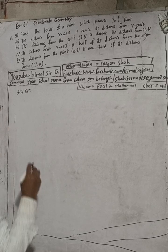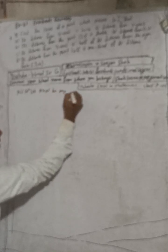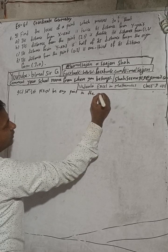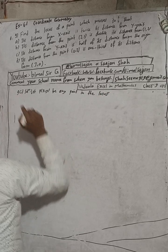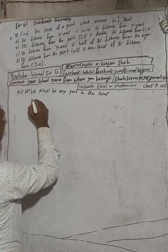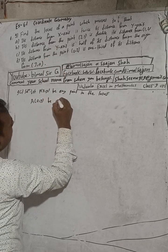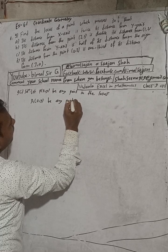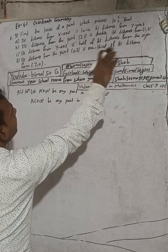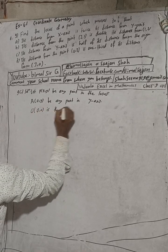Let P(x, y) be any point in the locus. Here, the distance from the y-axis — let A be a point (0, y), any point on the y-axis. And O(0, 0) is the origin, which gives half of its distance from the origin.